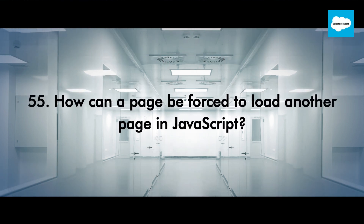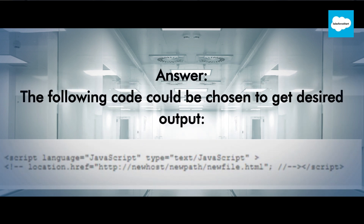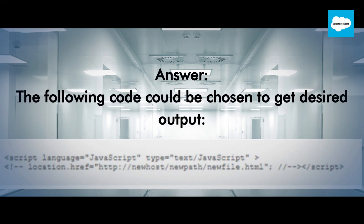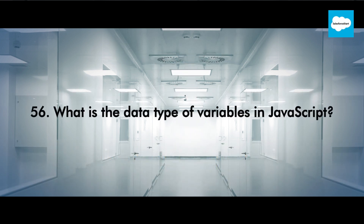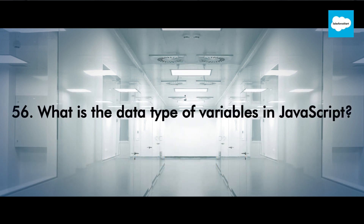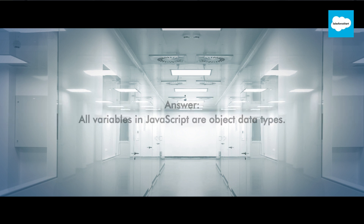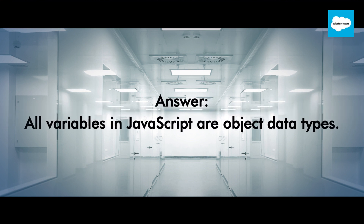How can a page be forced to load another page in JavaScript? The following code could be chosen to get the desired output. What is the data type of variables in JavaScript? All variables in JavaScript are object data types.